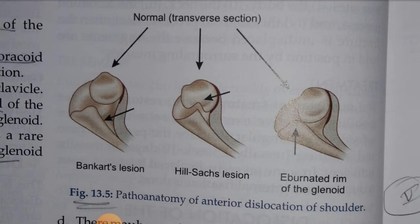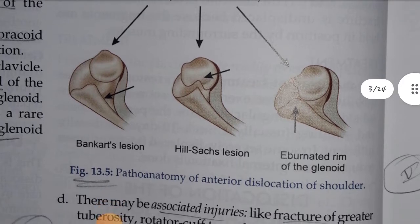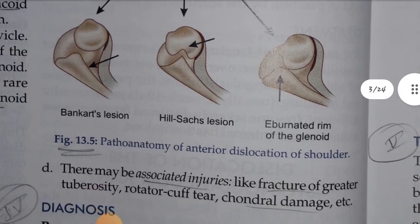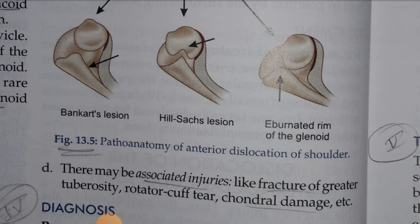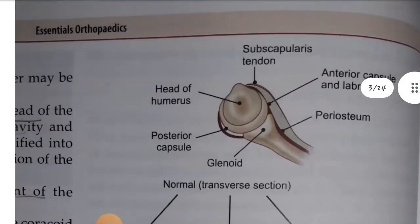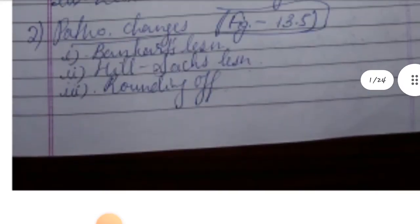The humeral head sits in front of the scapular neck. The anterior glenoid rim becomes rounded off in chronic cases when the head is dislocated repeatedly. These are all the pathological changes.